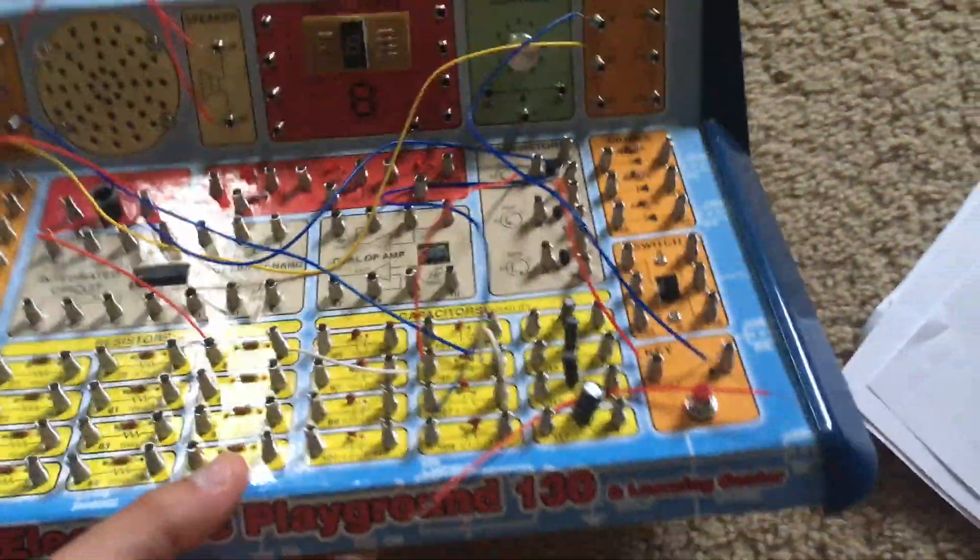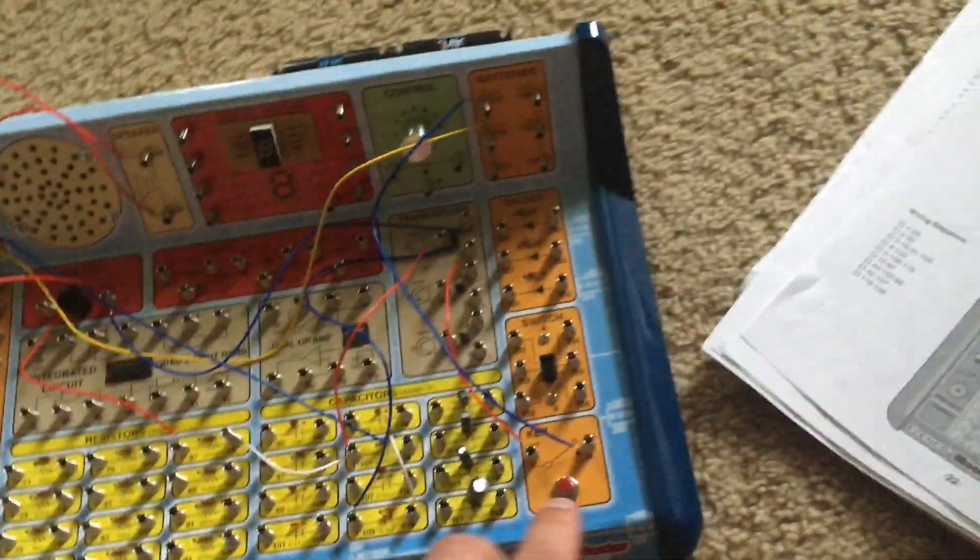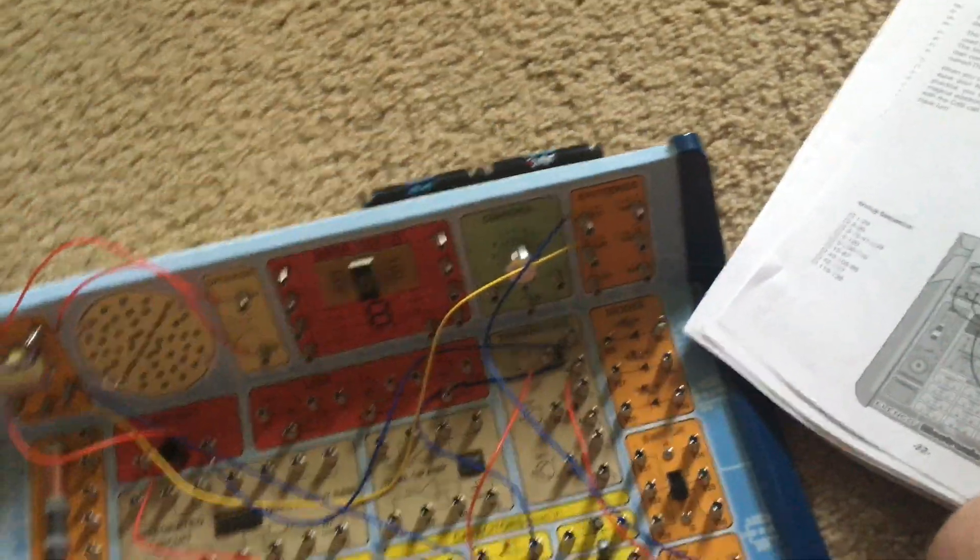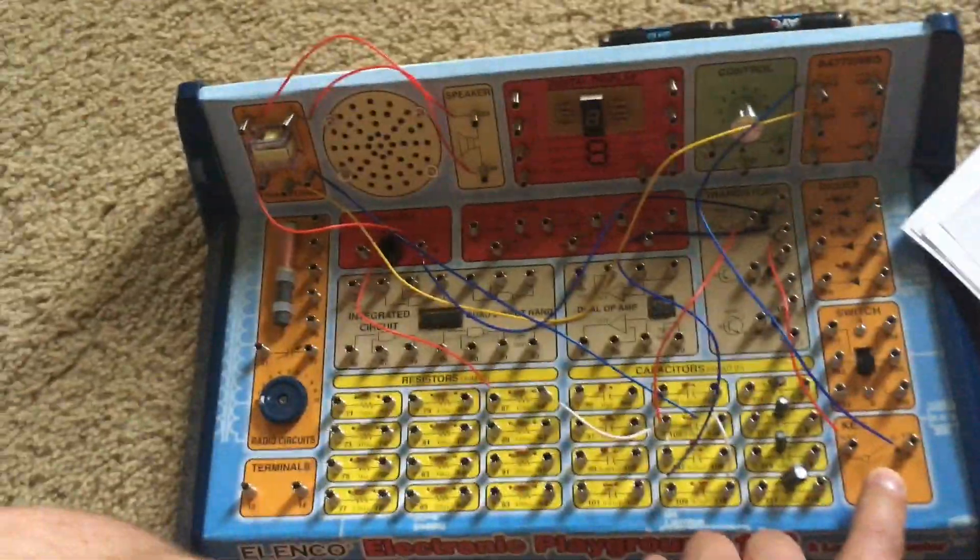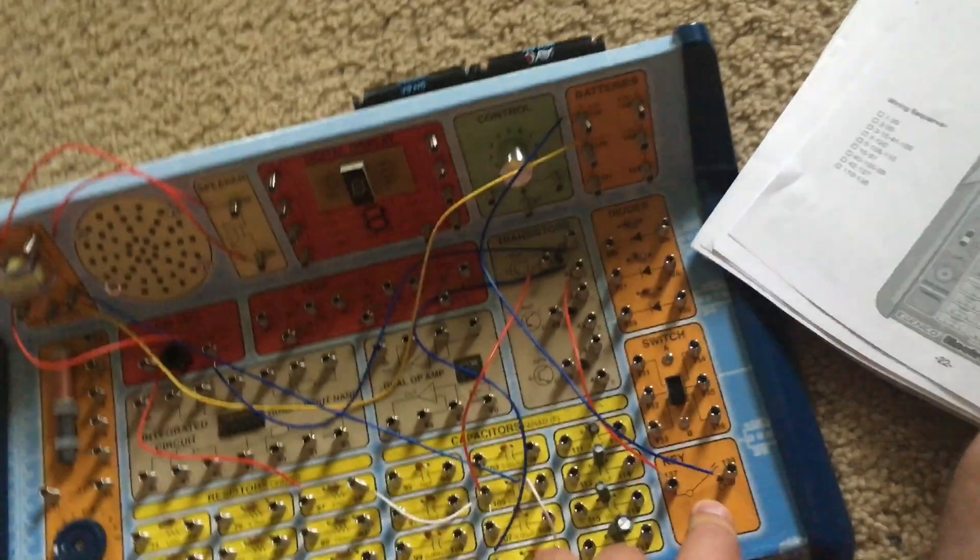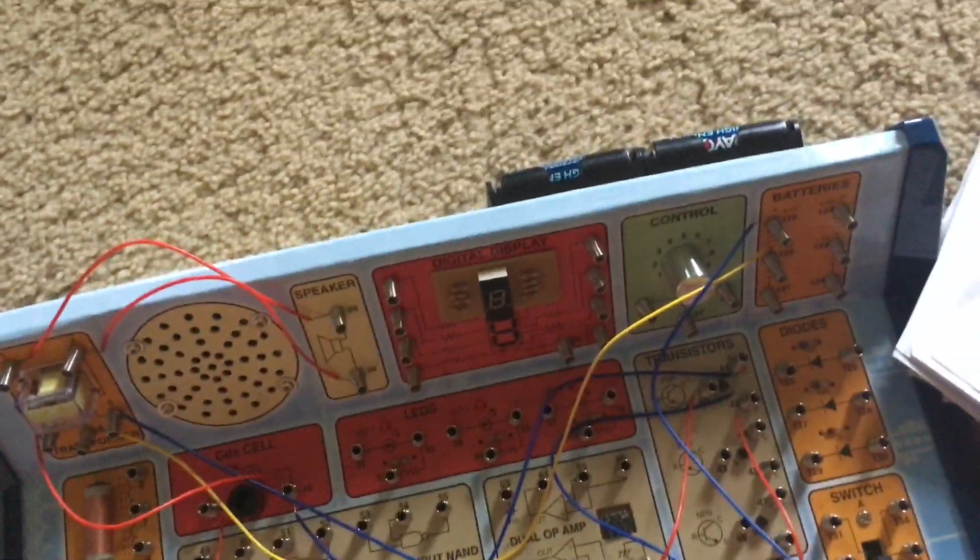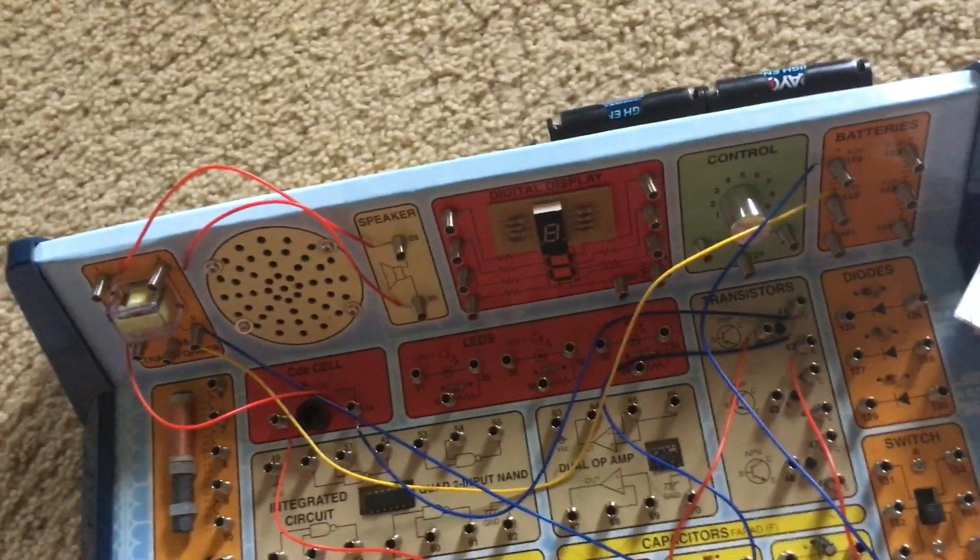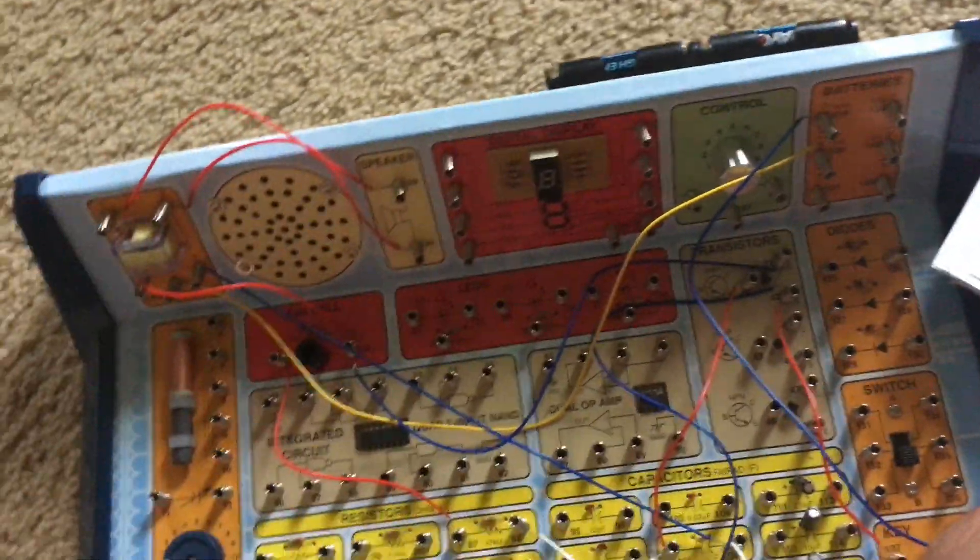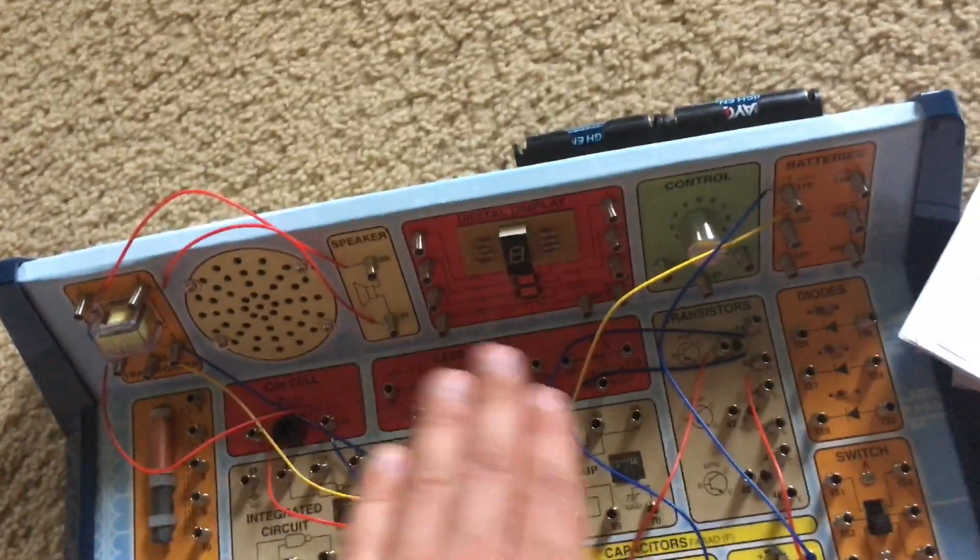This circuit will allow you to play a pretend electronic harp. How it works is that first you would hold down the key switch and you will hear a steady sound coming from the speaker. Now I'm going to use my knee to hold it down. And then you will need to wave your hand over the CDS cell.